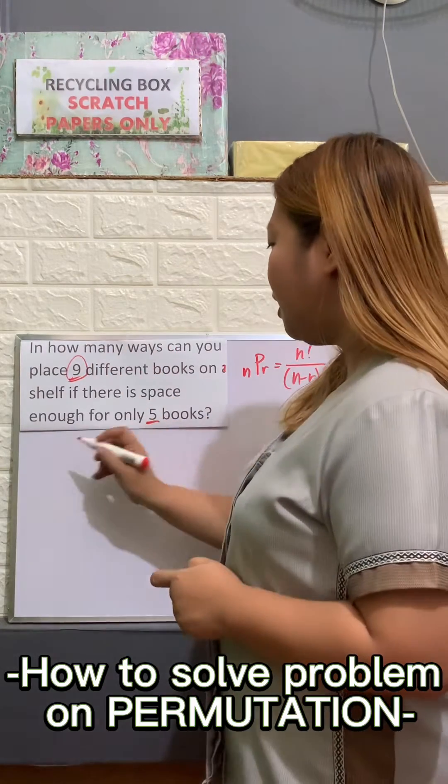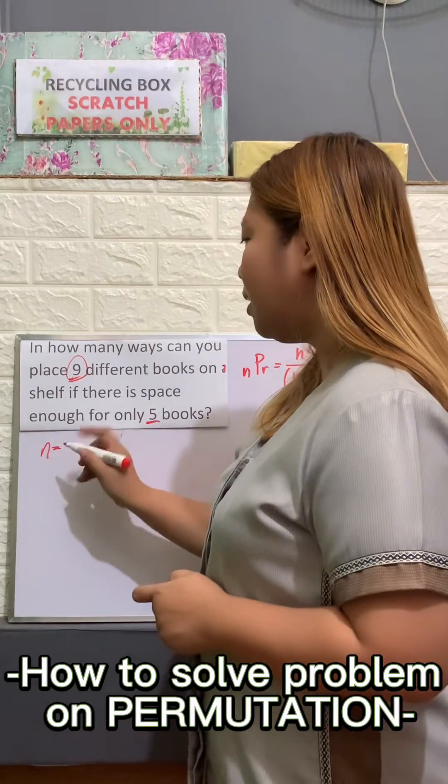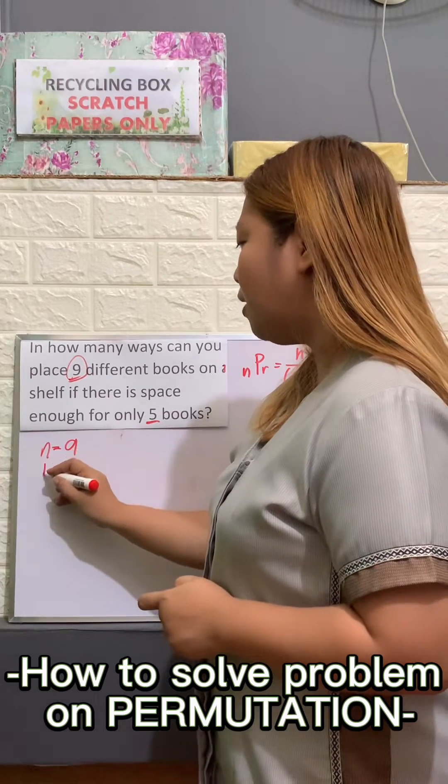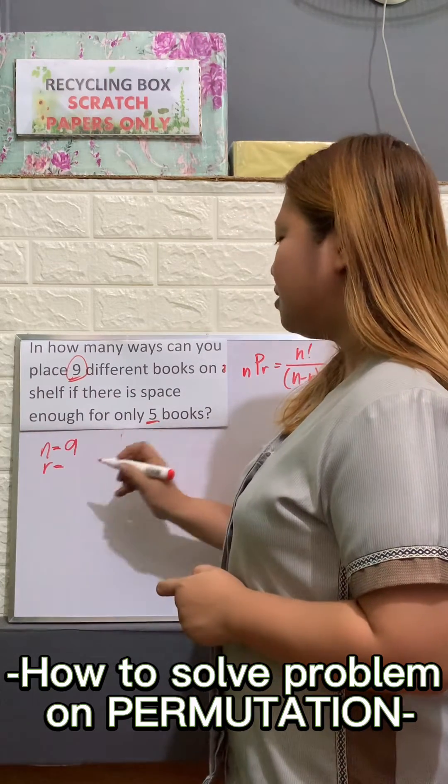What is our N here? Our N is the total number of objects which is 9 and then our R is 5.